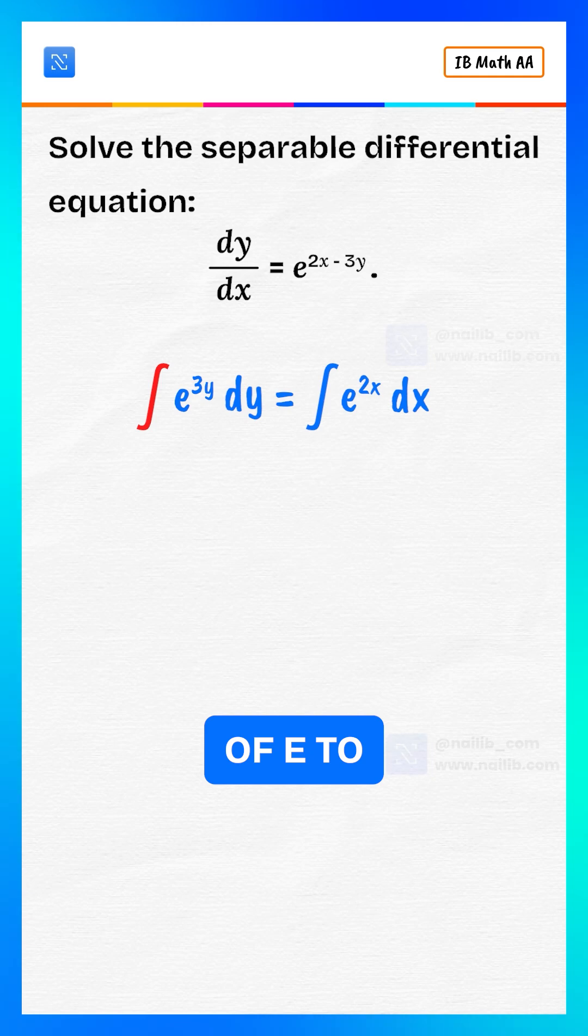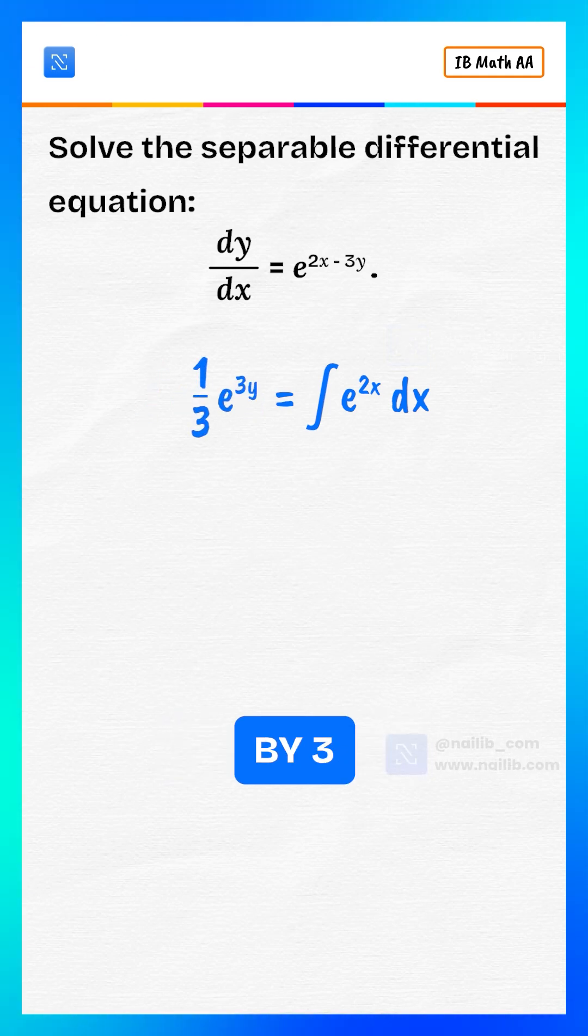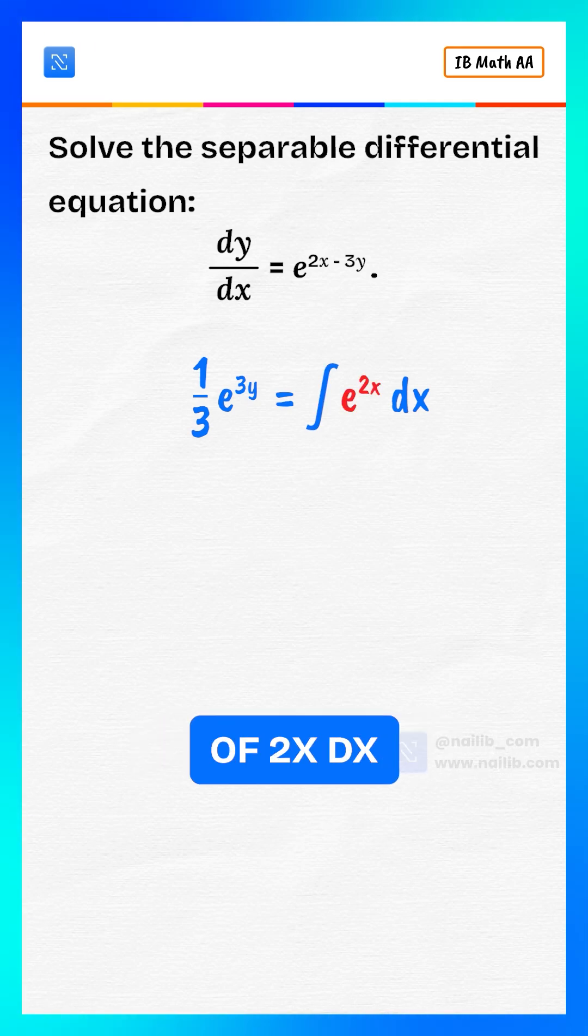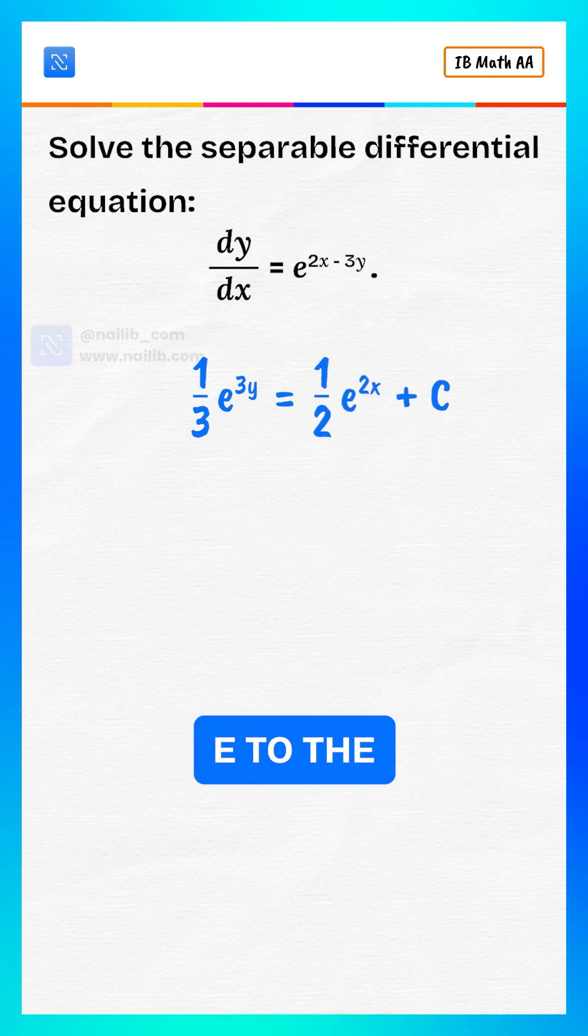The integral of e to the power of 3y dy becomes 1 by 3 multiply by e to the power of 3y. The integral of e to the power of 2x dx becomes 1 by 2 multiply by e to the power of 2x plus c.